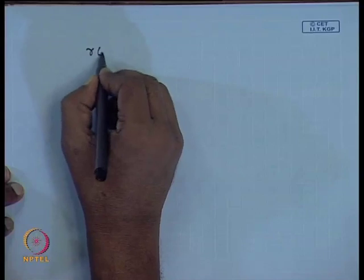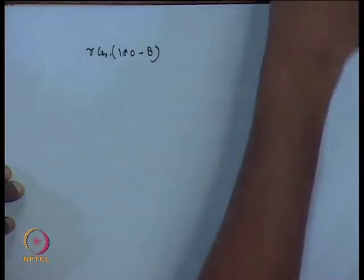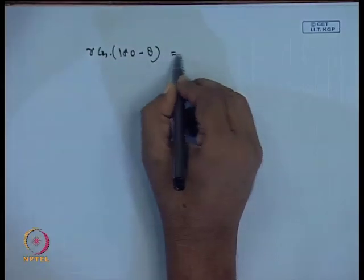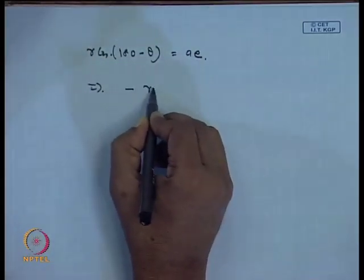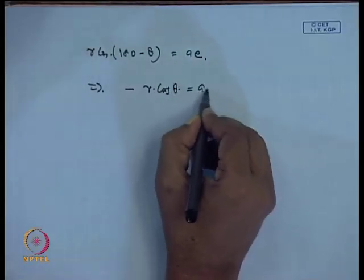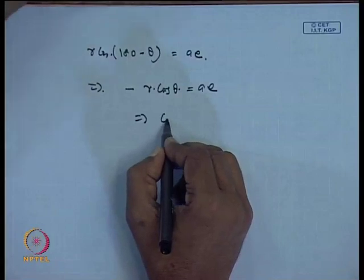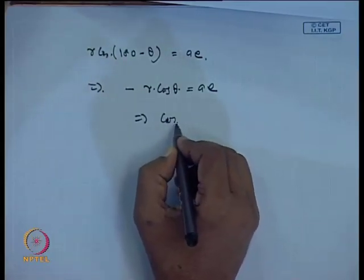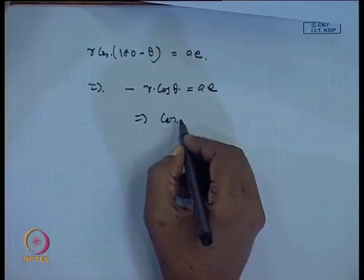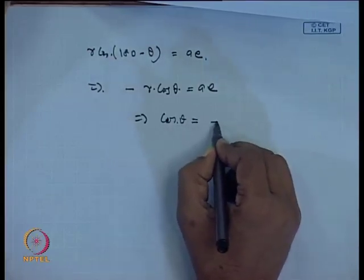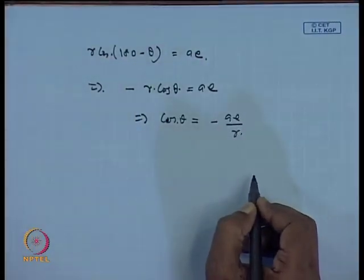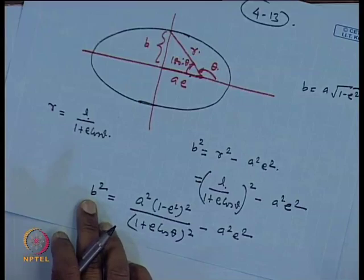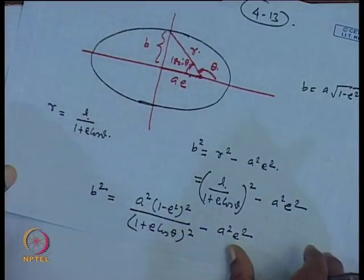Also, we can see that r·cos θ can be related to a·e. We need to eliminate cos θ from the expression, and the resulting relation will be in terms of b, a, and e. Let us write the equation as r equals l/(1 + e·cos θ), multiply through by cos θ, and this becomes equal to a·e.